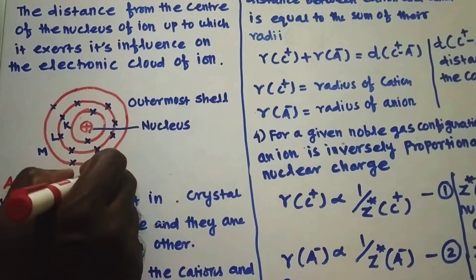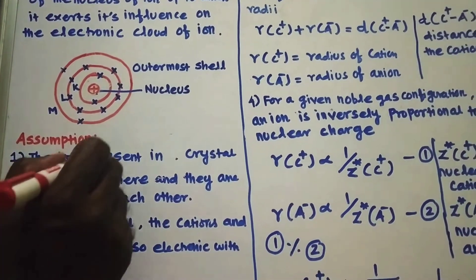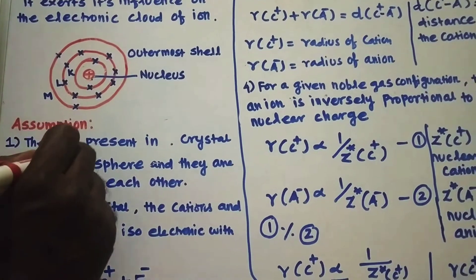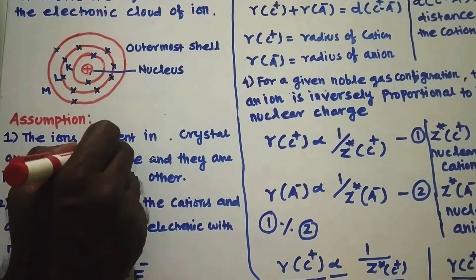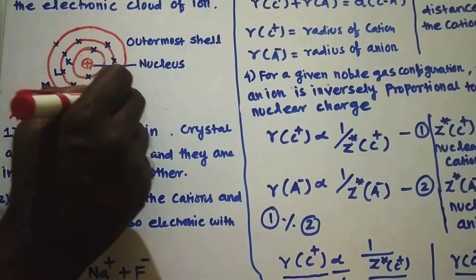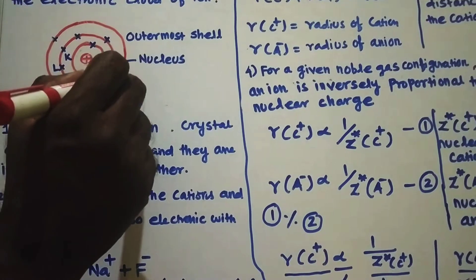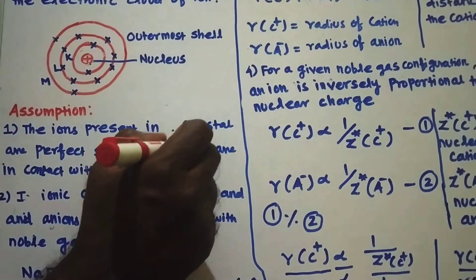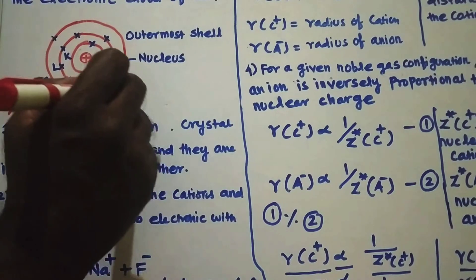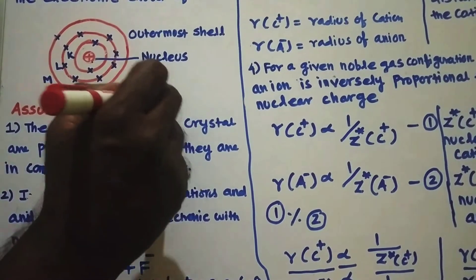Now we are going to see the assumptions. Assumption number one: the ions present in the crystal are perfect spheres. It is well known that electrons revolve around the nucleus — if anything revolves around the nucleus, it makes the shape of a sphere. And they are in contact with each other, meaning the positive ions and negative ions in the crystal are touching each other.